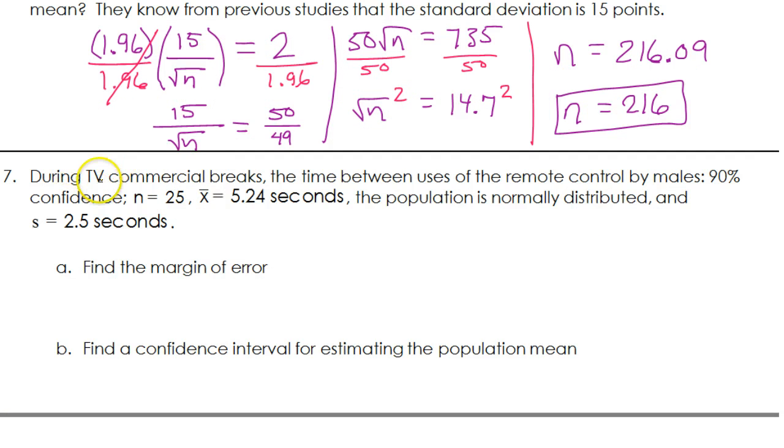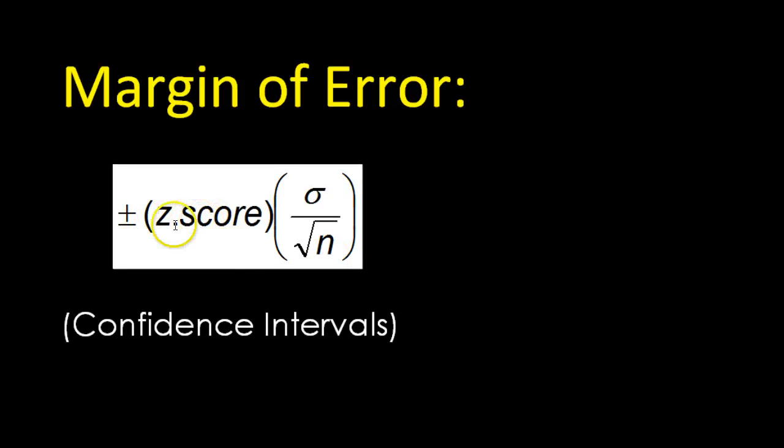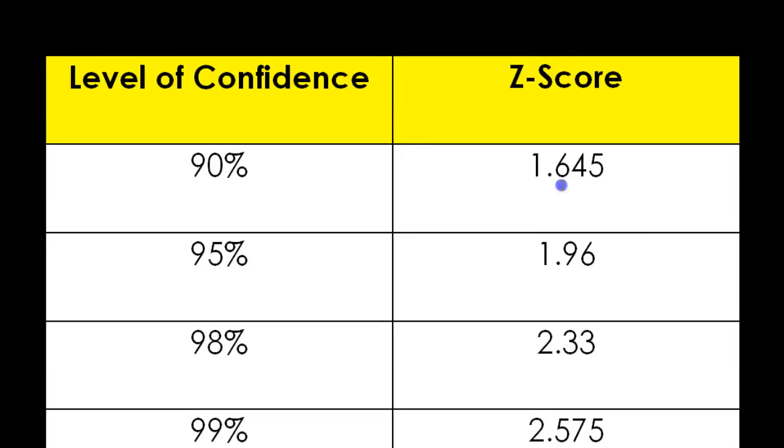Last problem, number seven. During TV commercial breaks, the time between uses of the remote control by males: we have a 90% confidence, sample size 25, sample mean of 5.24 seconds. The population is a bell curve, normal distributed, and there is a sample standard deviation of 2.5 seconds. They told me the 90% confidence level, so at 90%, the z-score is 1.645.